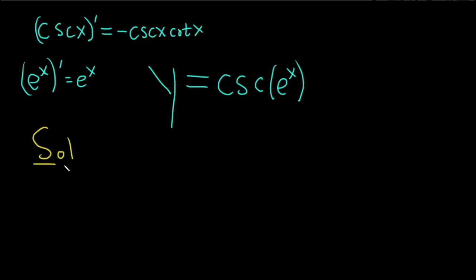The chain rule basically says that we take the derivative of the outside function and leave the inside function alone. So it'll be negative cosecant of e^x, cotangent of e^x...